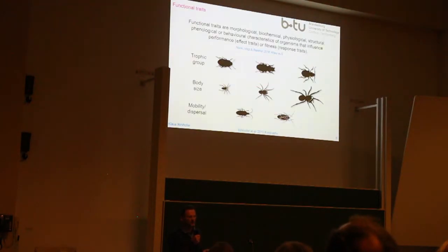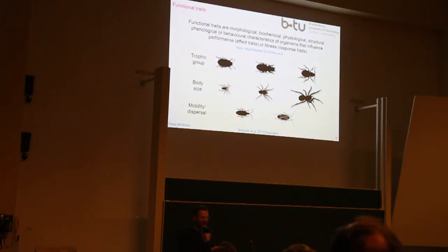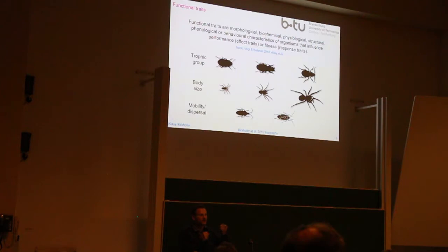That's exactly the functional diversity approach. By textbook definition, functional traits are morphological, biochemical, physiological, structural, or phenological properties of a given species. These are separated into response traits — properties particularly sensitive to disturbance — and effect traits, which affect the performance of the community in which that species is part.